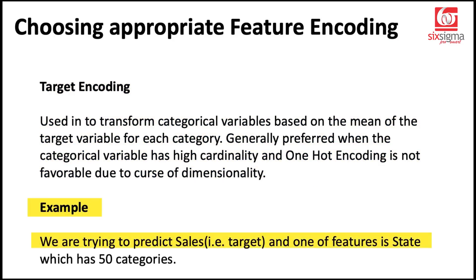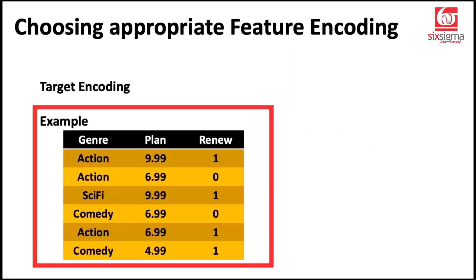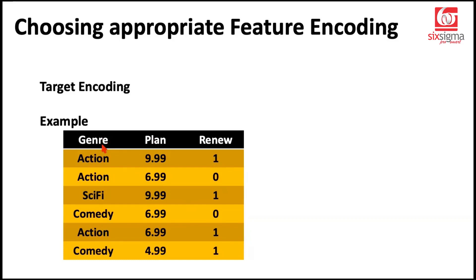Let's look at an example of target encoding. We are trying to predict sales, and one of the features to encode is 'state,' which has 50 categories. Would you get 50 different columns? With one-hot encoding, that would be 49 columns — a lot to deal with at once. In such cases, we would prefer target encoding. Another example: predicting whether an OTT customer would renew their subscription, using genre as a feature. With potentially 20 or more genres, target encoding becomes practical.